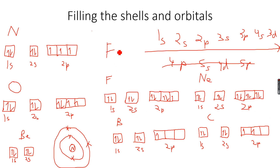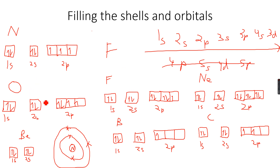Fluorine forms single bonds because it has one half-empty orbital. It can only accept one electron to fill that half-empty orbital, and that's why fluorine forms single bonds.